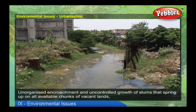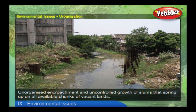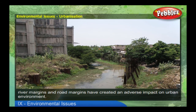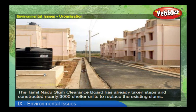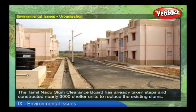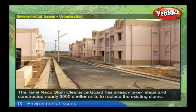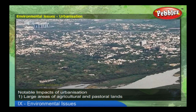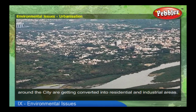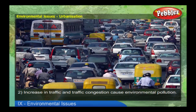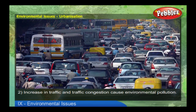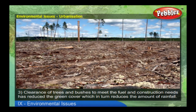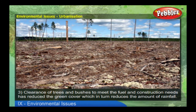Unorganized encroachment and uncontrolled growth of slums that spring up on all available chunks of vacant lands, river margins, and road margins have created an adverse impact on the urban environment. The Tamil Nadu Slum Clearance Board has already taken steps and constructed nearly 3,000 shelter units to replace the existing slums. Large areas of agricultural and pastoral lands around the city are getting converted into residential and industrial areas. Increase in traffic and traffic congestion cause environmental pollution. Clearance of trees and bushes to meet fuel and construction needs has reduced the green cover, which in turn reduces the amount of rainfall.